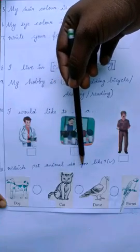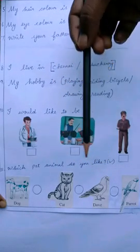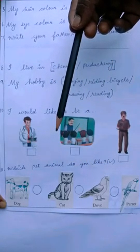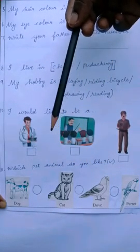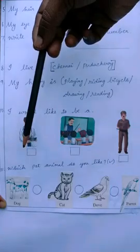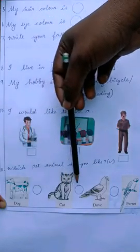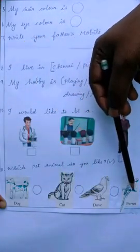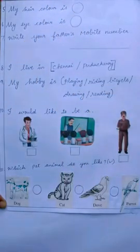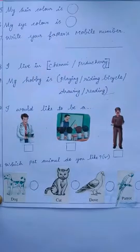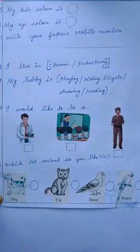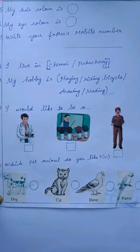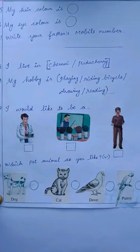Which pet animal do you like? Children, do you have a pet animal at home? If you do, which animal do you like? You have to pick here — dog, cat, dove, or parrot. Okay children, write the worksheet neatly and file it safely. We will see you in the next class. Thank you.